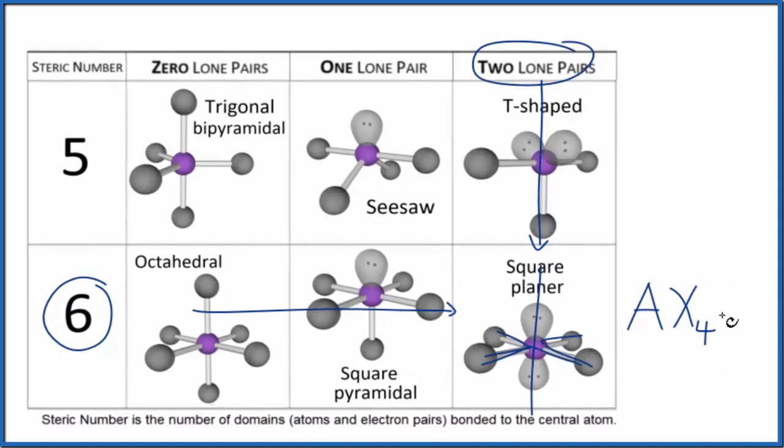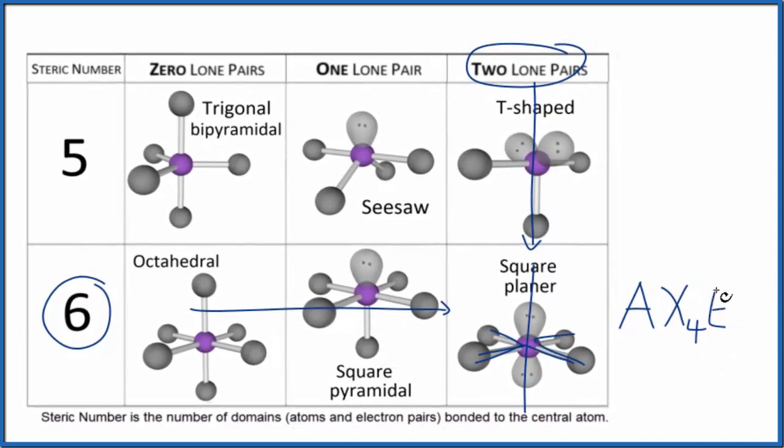And N, sometimes called E - let's call it E, that's more common - that's the number of lone pairs. Remember we had the two lone pairs there. So AX4E2. If you'd memorized that, that's square planar, or sometimes you're allowed to use a table to look it up. So either way, the molecular geometry for ClF4- is square planar.